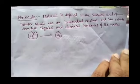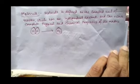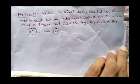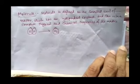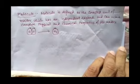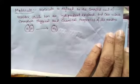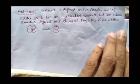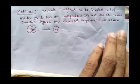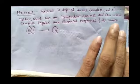What is a molecule? A molecule is defined as the smallest unit of matter which has an independent existence and can retain the complete physical and chemical properties of the matter. From the nature of the molecules we can get complete details about the physical and chemical properties of the matter.